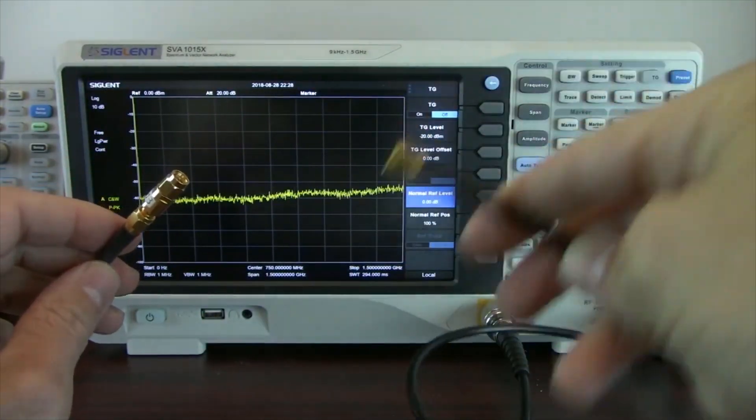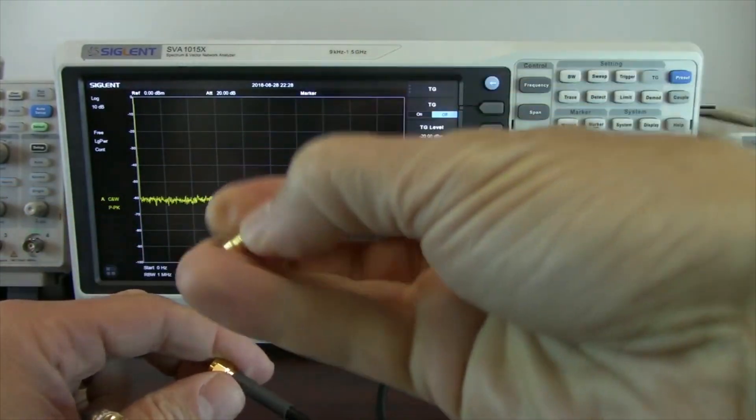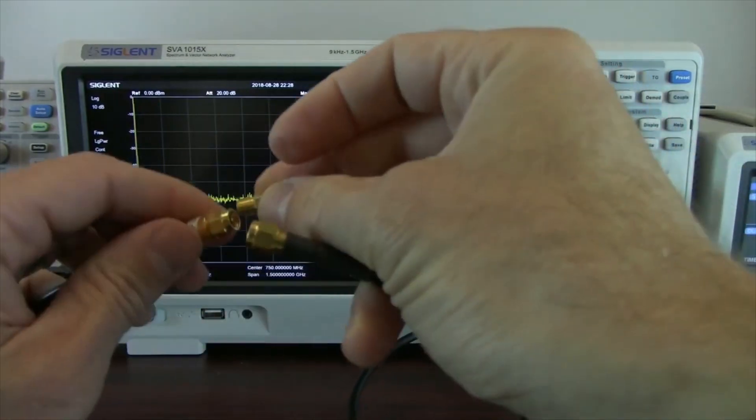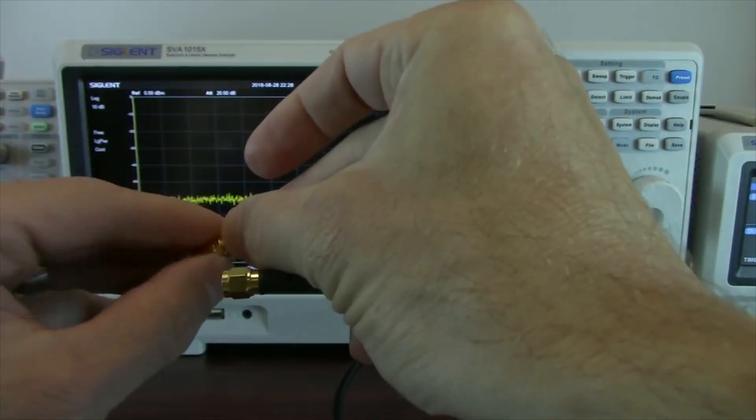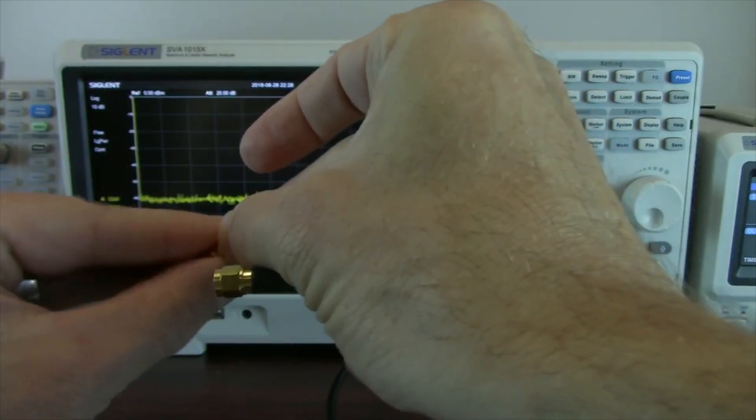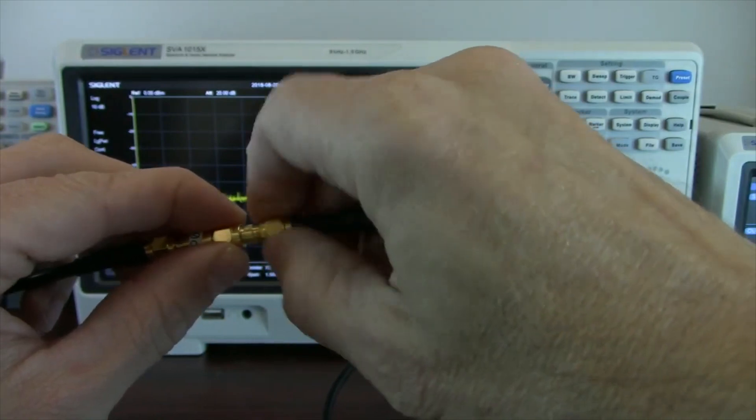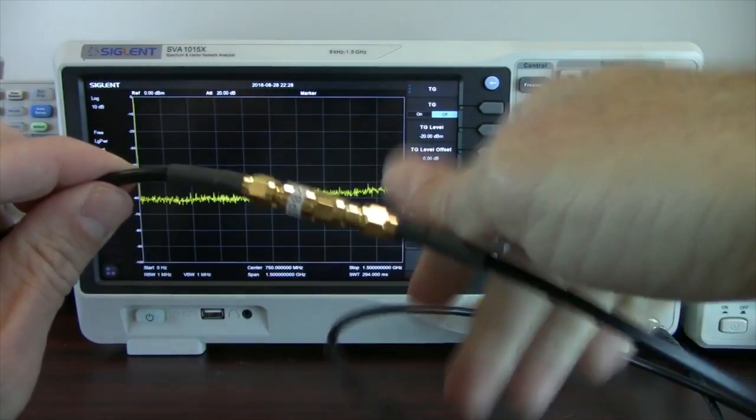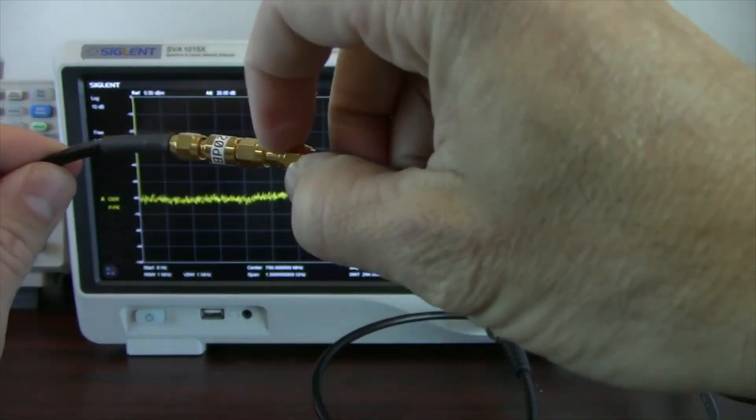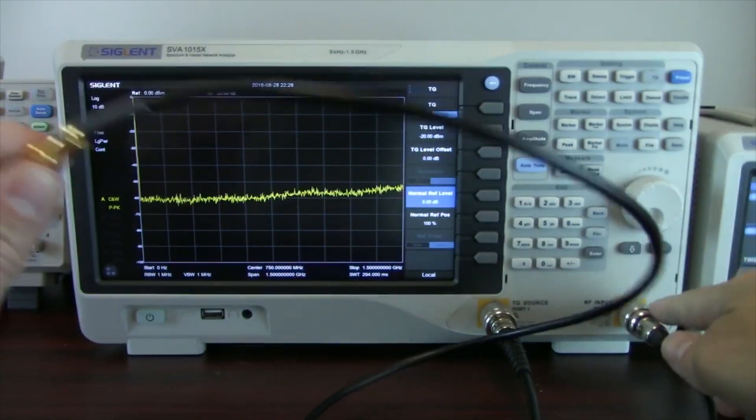Then I'm going to take the RF input to the spectrum analyzer, and I'm going to take an SMA to SMA through connection. Again, I'm tightening the hex end. I'm not spinning the barrel, and I'm going to put that through connection in. Now what I have is an adapter, a cable, an attenuator, the through connector, and then another cable to an adapter.